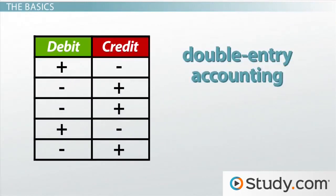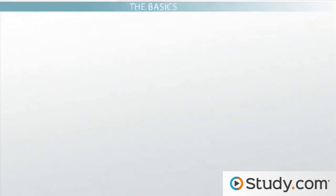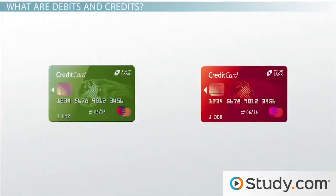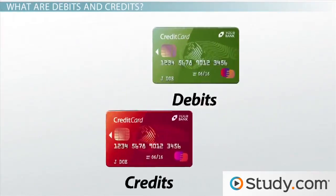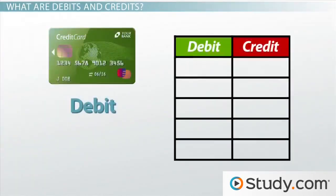Double-entry accounting requires that every business transaction be recorded in at least two accounts. One account will be debited and one account will be credited. So now that you have the basics down, let's talk a little bit about what debits and credits are.